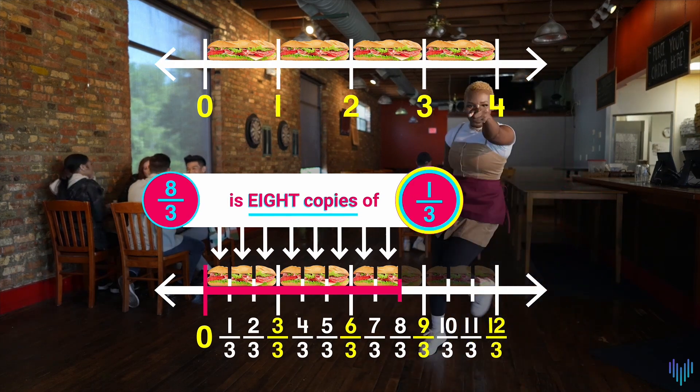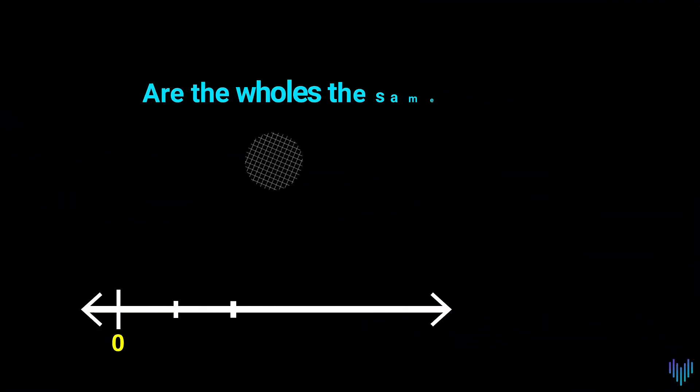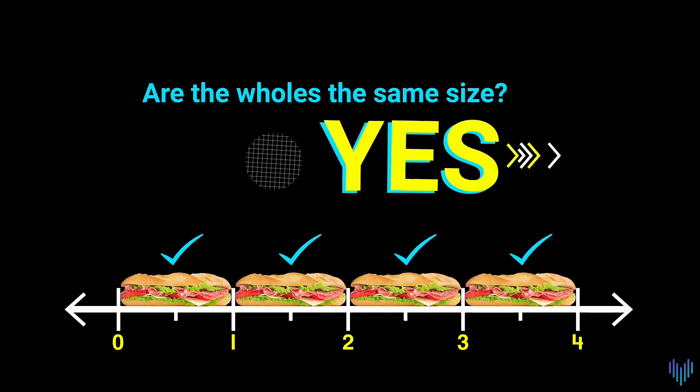Eight-thirds is eight copies of one-third. Let's compare fractions again. First, are the wholes the same size? Yes.